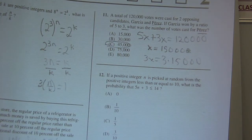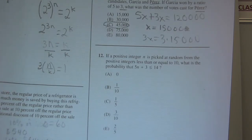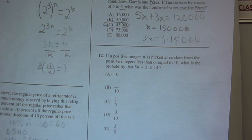Okay, number 12. If a positive integer n is picked at random from the positive integers less than or equal to 10, what's the probability that it solves that equation?